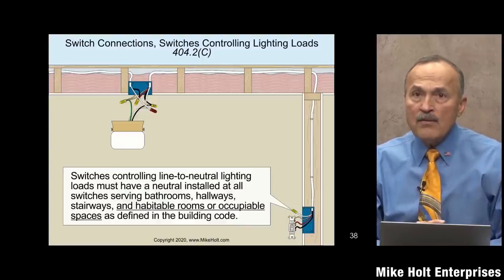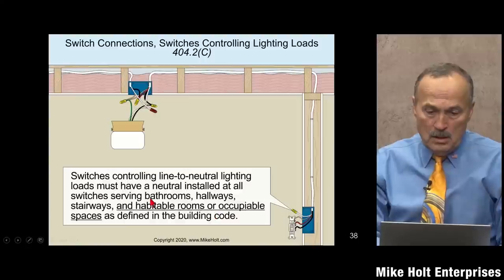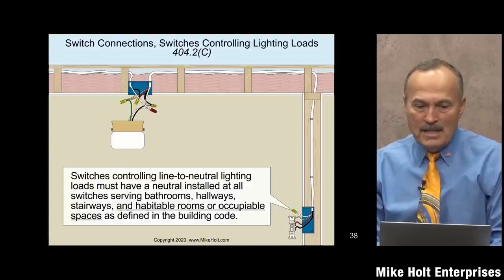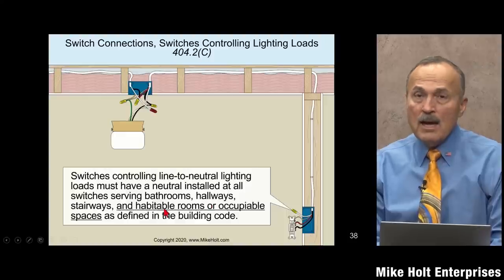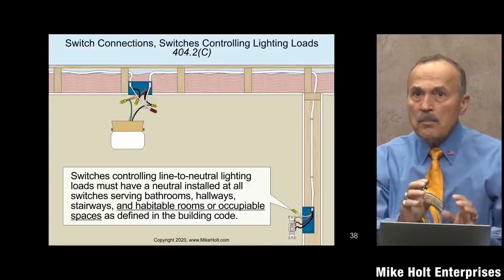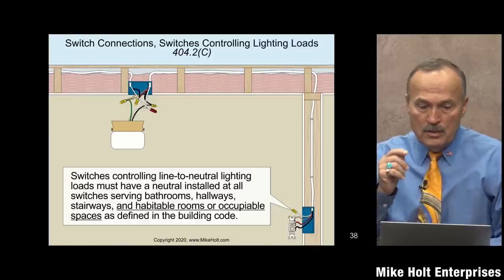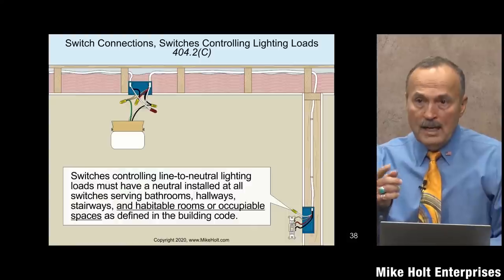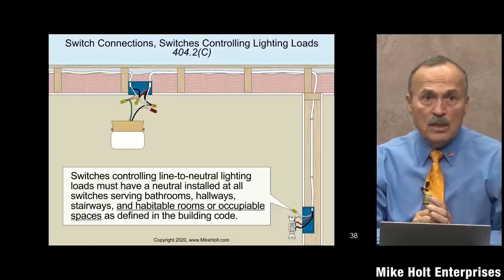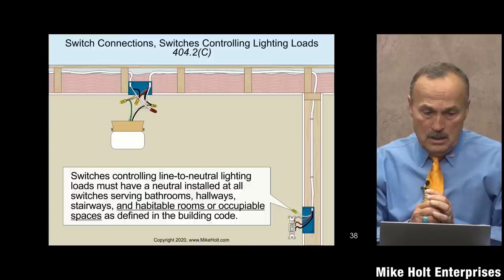So in a dwelling unit, it looks like you have to have a neutral at every single switch location in those listed spaces. There are places where you don't need a neutral — for example, switches for outside lighting, garage lights, unfinished basements, attic spaces, and closets do not require a neutral.